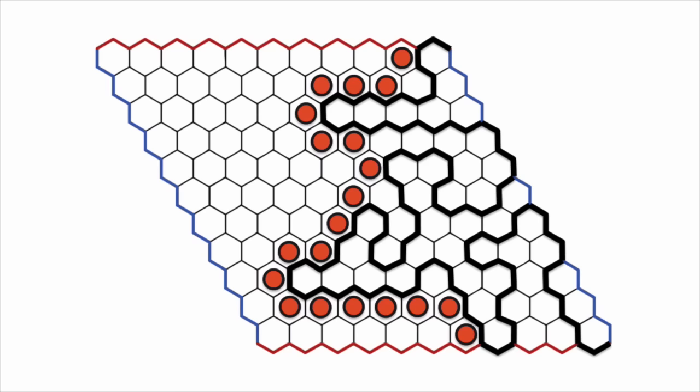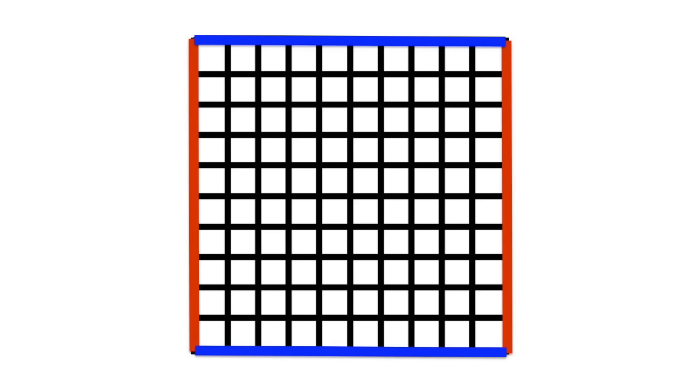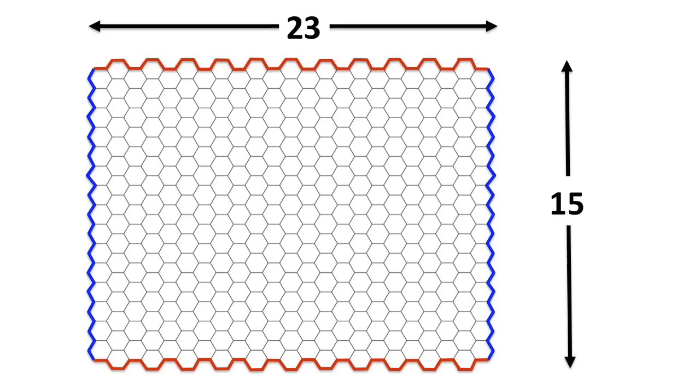We now have a chain of highlighted edges connecting one side of the board to the other and therefore a colored path. This argument doesn't work for square grids. Here is a way to make vertical and horizontal barriers so that nobody wins.